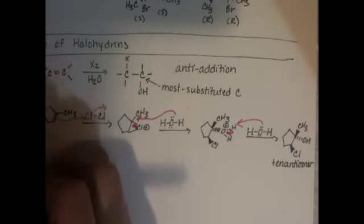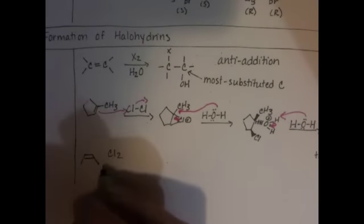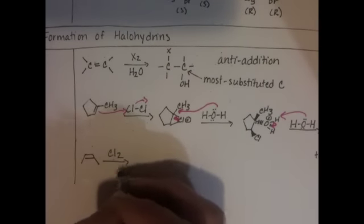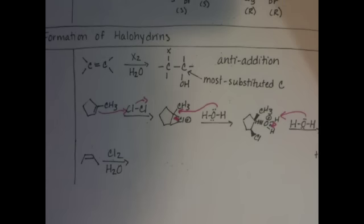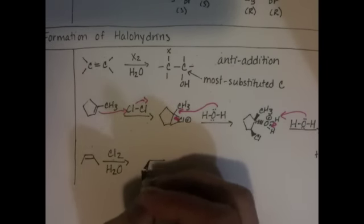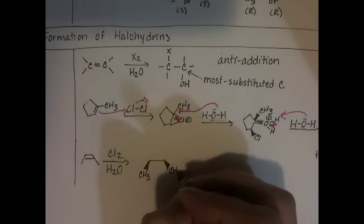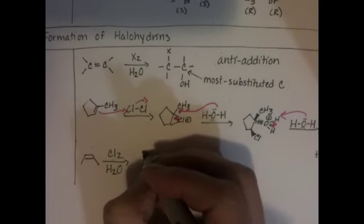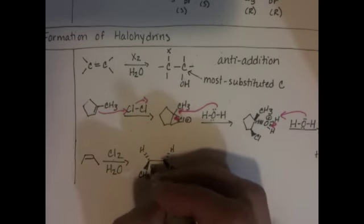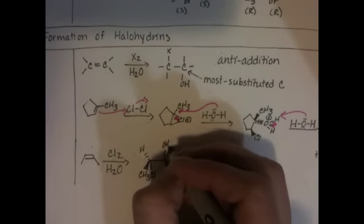Let's do another example. 2-butene reacting with Cl2 in water. Quick and dirty. We've got methyl groups on the same side, cis. So we're going to put both of those as wedges. We've got hydrogens going in the back, dashes. We're going to put a chlorine going down and a hydroxide going up.